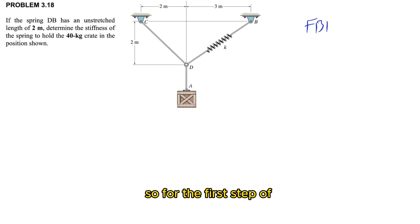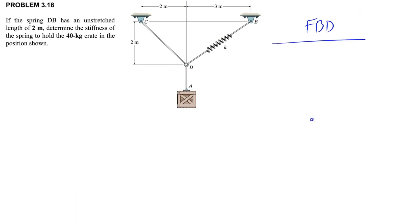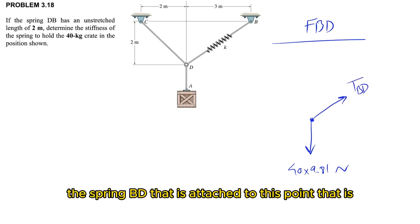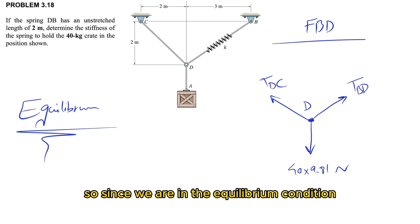The first step is to draw the free body diagram of point D. We have the weight of the crate, which is 40 kilograms times 9.81. We have the spring BD attached to this point making a force, let's call it T_BD, and we also have the other cable T_DC.